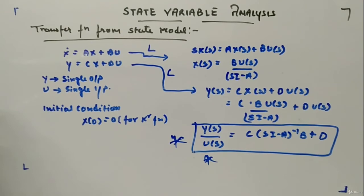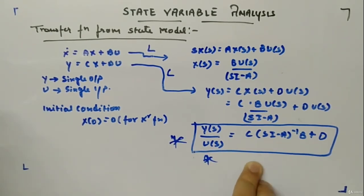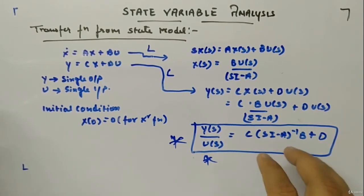Okay, so we are going reverse from state model to transfer function, and this initial condition will always be zero when you will be obtaining transfer function. C(sI - A)^(-1)B plus D, these are vectors and matrices, okay, so it is in that form, they are not scalars. We will see examples as well.